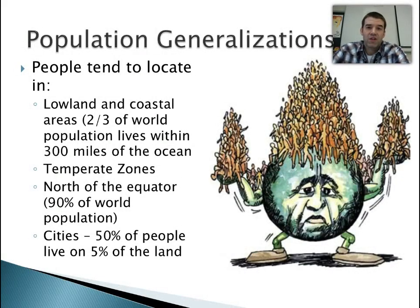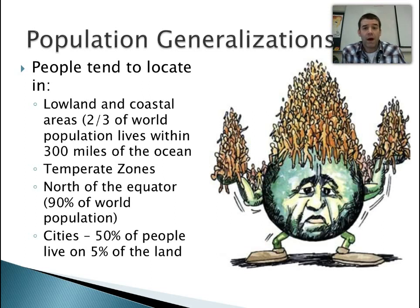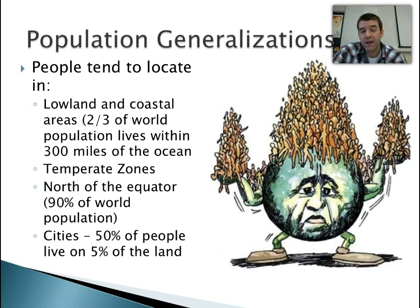When we talked about population in general and the 7 billion threshold, we also started to look at where those population centers are. About two-thirds of the population lives within 300 miles of the coast. Most higher populations are going to live in more temperate climate zones. About 90% of the population is above the equator, north of the equator. And an increasing phenomenon in the world today is that populations are becoming increasingly urban.